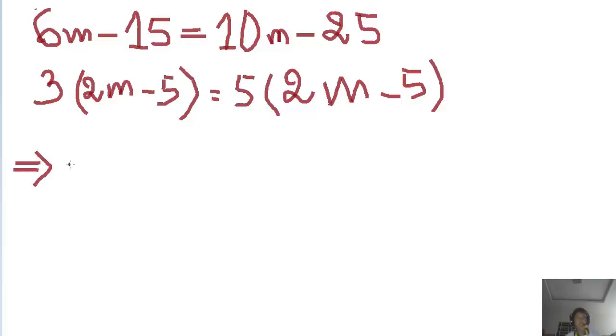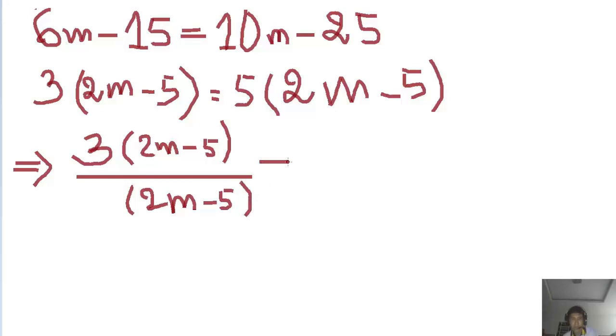Okay, so when like this, we can write 3 times (2m minus 5), close the parenthesis, and divide by, or over, 2m minus 5. That's an easy way to understand.